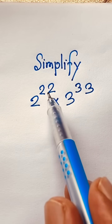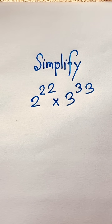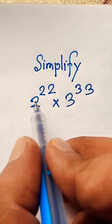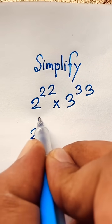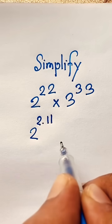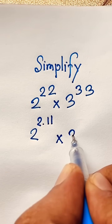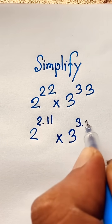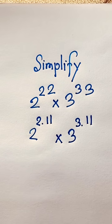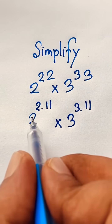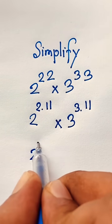How to simplify 2 to the power 22 times 3 to the power 33. First, I can see that it will be 2 to the power 2 times 11, and here is 3 to the power 3 times 11. Now at this moment, according to exponential law, I can rewrite this expression.